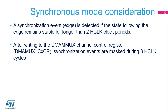A synchronization event on edge is detected if the state following the edge remains stable for longer than two AHB clock periods; this delay ensures that glitches on the synchronization event are not taken into account. After writing to the DMA-MUX CX-CR control register, synchronization events are masked during three AHB clock cycles. This delay masks possible synchronization events that could occur while the control register is updated, causing metastability. The synchronization event overrun condition occurs when a new synchronization event is received while the request multiplexer counter is different than zero.